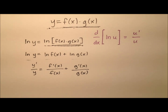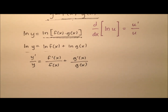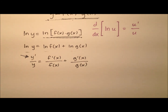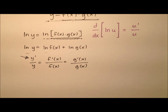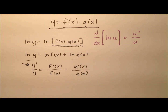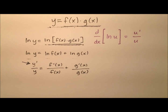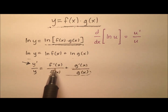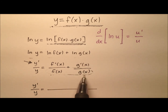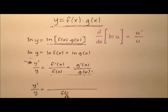What we're trying to solve for here is y prime, because y prime is like dy/dx, and that will give us our derivative rule for the product of two functions. So let's get common denominators for the right side. The common denominator will be f of x times g of x — just the product of those two.